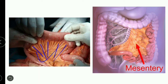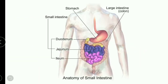The internal organ support structure is the peritoneum, and the mesentery is a fold of the peritoneum. The mesentery holds the visceral organs in proper position. The small intestine has three parts: the duodenum, jejunum, and ileum.